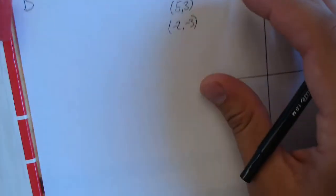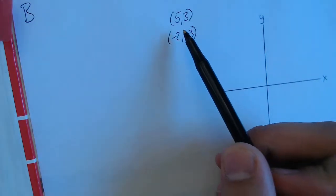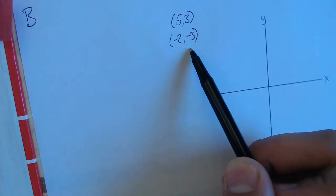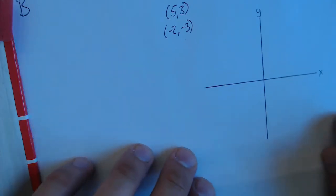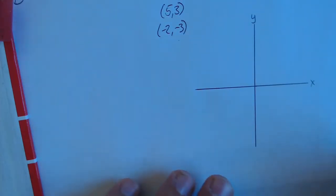Moving on to problem B. They give us 2 points on a coordinate plane. They give us the point (5, 3) and (-2, -3). They want us to find the distance between the 2 points. So first, we have to start by graphing those 2 points.